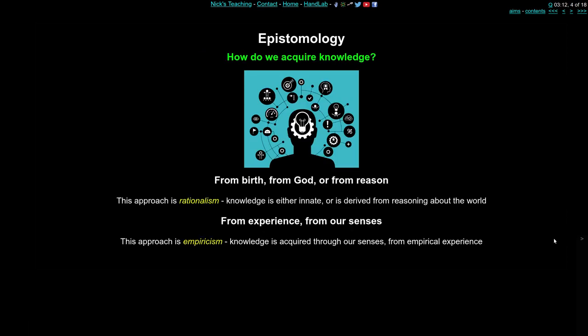So how do we acquire knowledge? The rationalists, like Descartes, would say that we're born with certain kinds of knowledge, and this knowledge comes from God. All other knowledge we can work out through reason and from first principles — starting from very basic forms of innate knowledge and building up all other knowledge by reasoning about the world. This is rationalism.